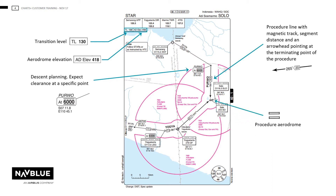The location of the procedure aerodrome is shown with the runways correctly lined up to their heading. Here we can see a NAVAID off the chart. The details of the NAVAID will be shown, including the name, frequency, and the three-letter ident.